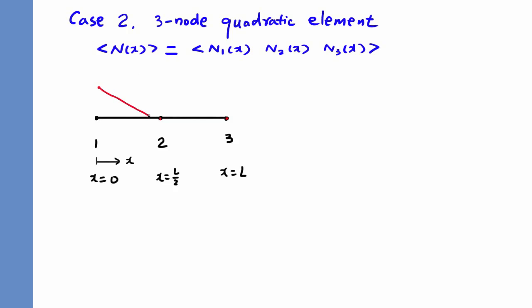So, shape function N1 should have value 1 at node number 1 and 0 at nodes 2 and 3. It can be constructed by Lagrange interpolation.